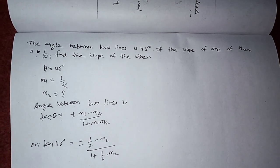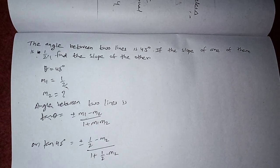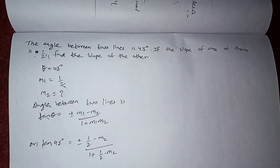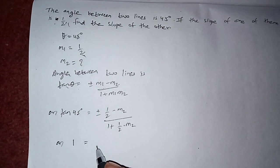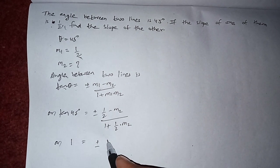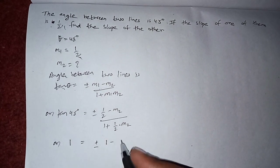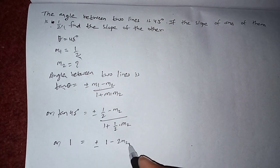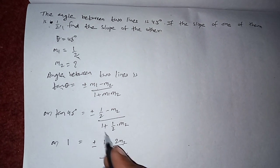So tan 45 is equal to 1. And then plus minus, we can take the LCM here. It will be (1 minus 2m2) by 2.